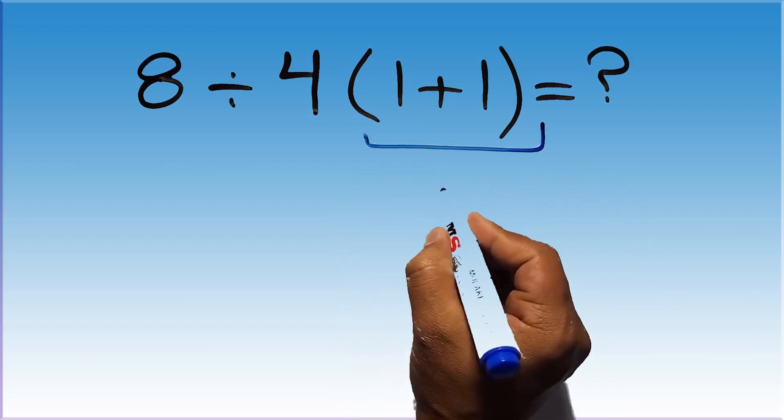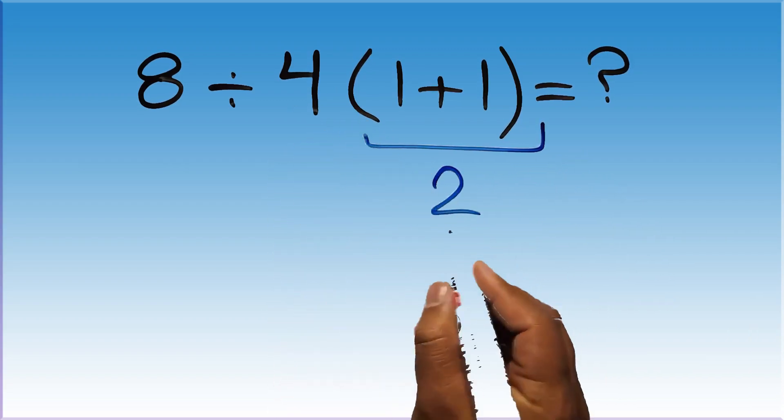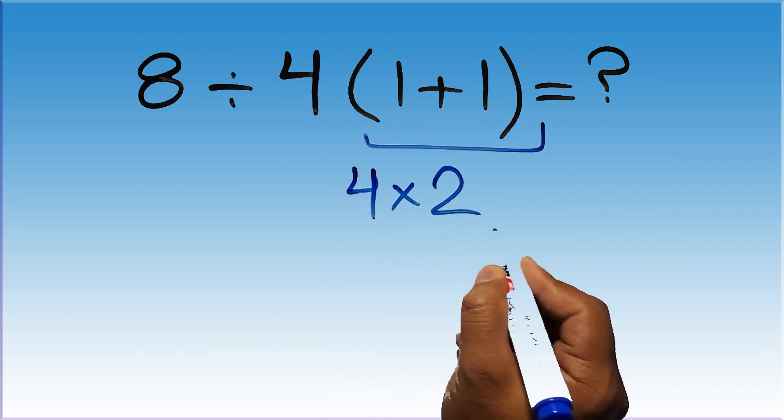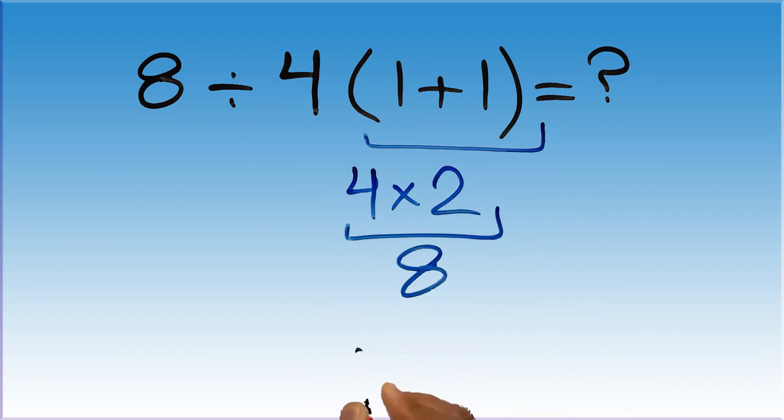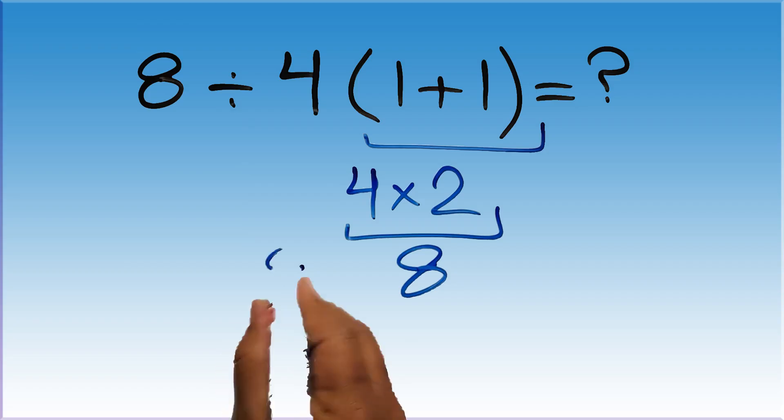2 and 4 times 2 gives us 8. So 8 divided by 8 is just 1.